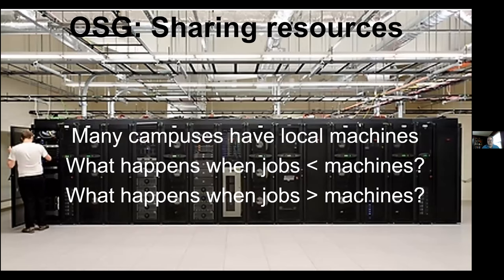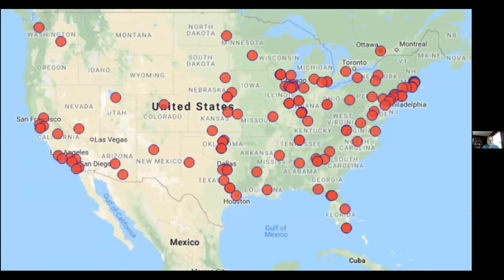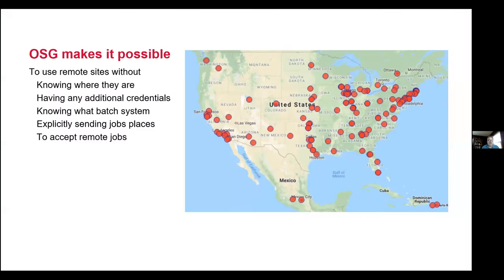We haven't talked too much about the OSG yet, but we'll talk about it tremendously later. Fundamentally, the OSG is pretty straightforward — it's just about sharing resources. Many campuses in the OSG have local machines, but not all; some have no local resources and are still part of the OSG. What happens when you have fewer jobs than machines, or more jobs than machines? That's really where the OSG comes in. This map shows OSG sites, which is probably always a little out of date.